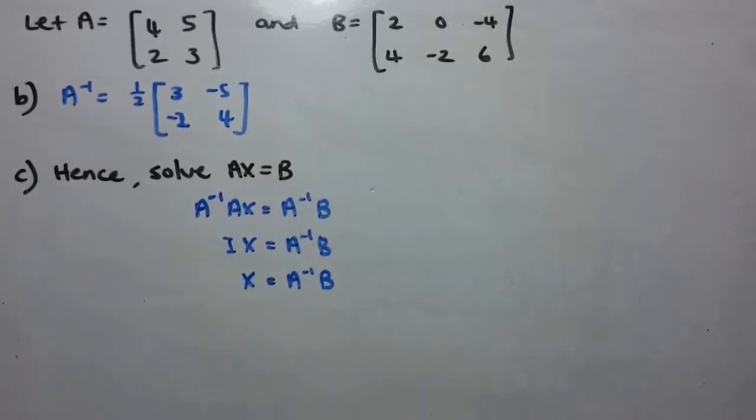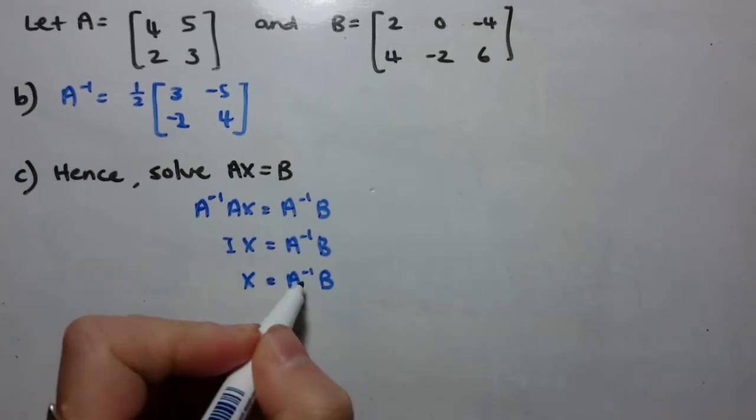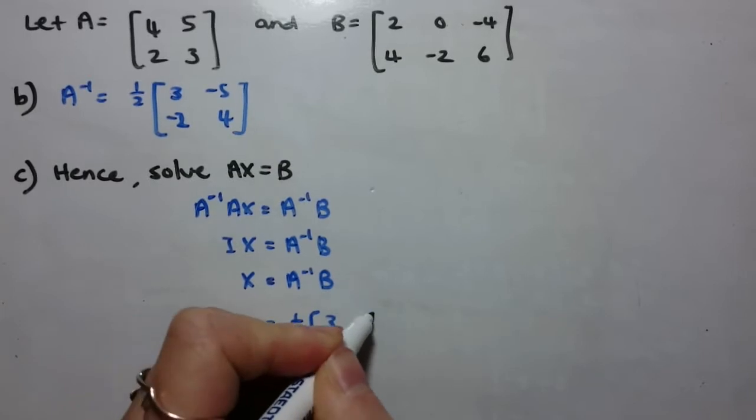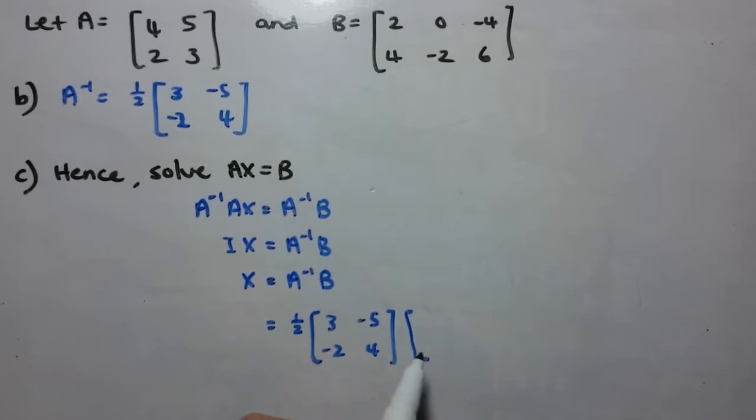So if we want to solve for X, all we have to do is grab our inverse, that's that up there, again I'm going to use the form without all the fractions inside the matrix, just to make it a bit easier to multiply, and then we're going to multiply that by B.